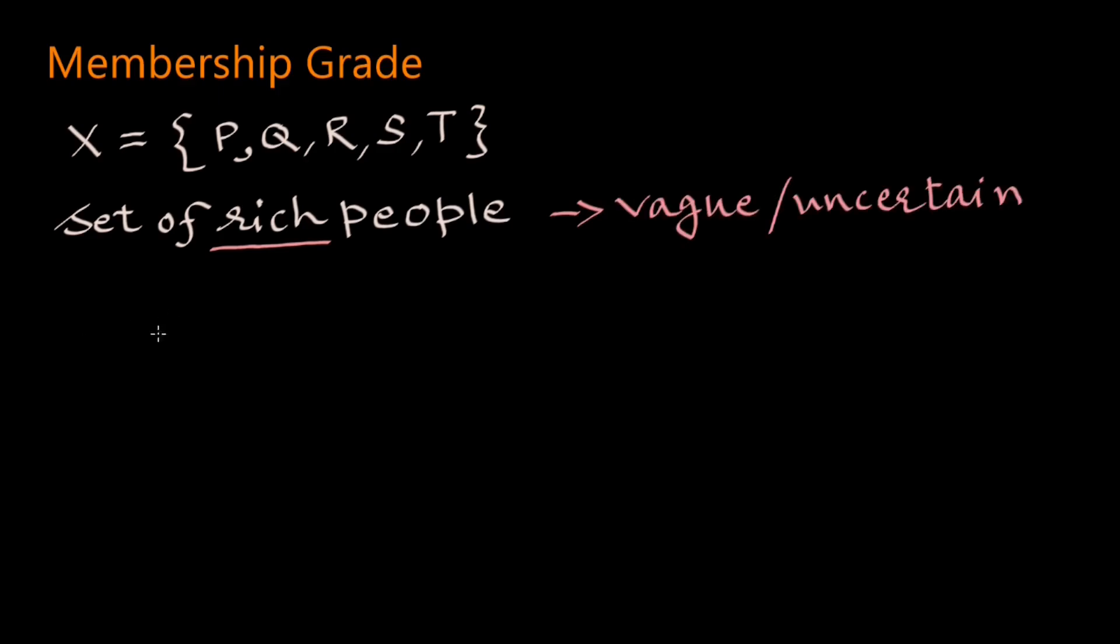Suppose we have a universal set X containing 5 people P, Q, R, S, and T of a city and we want to form a set of rich people. We have seen earlier that word rich being an adjective is vague or uncertain and hence we cannot form set of rich people unless we assign each of these 5 people a membership grade or membership value.